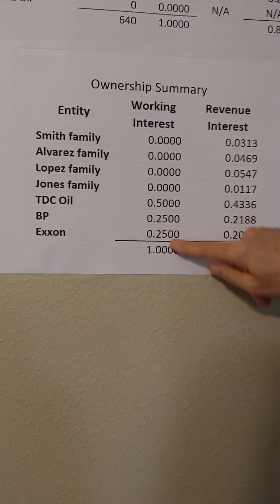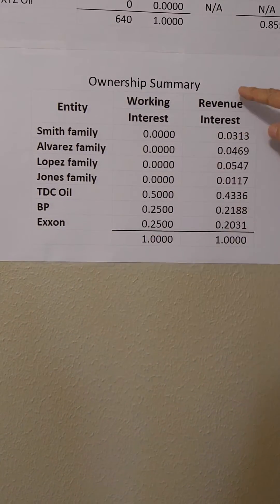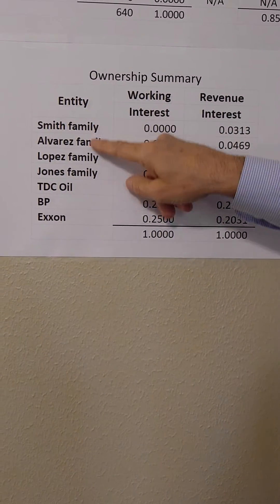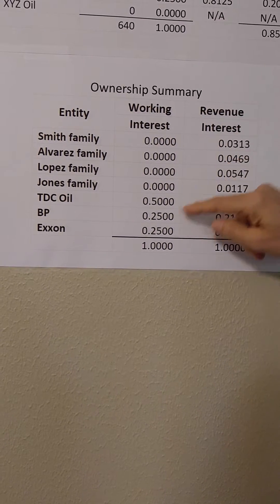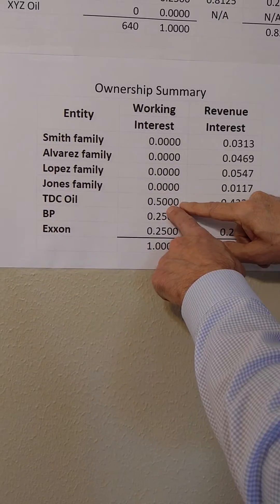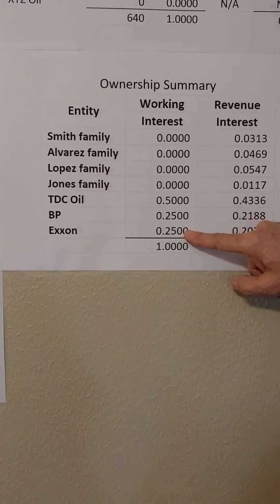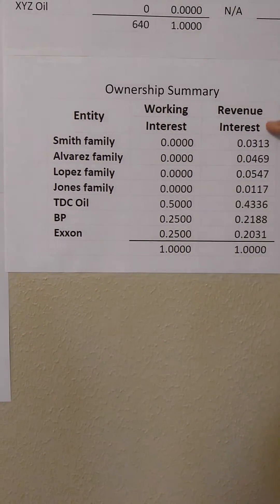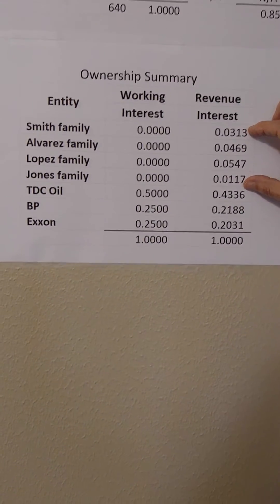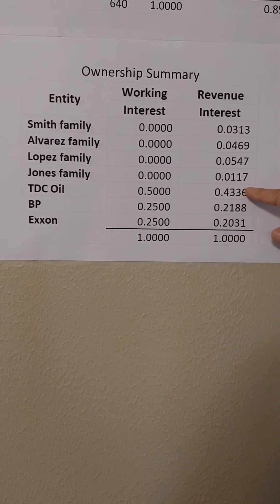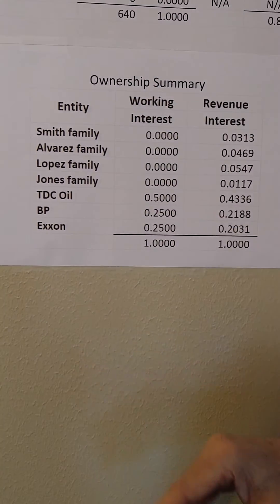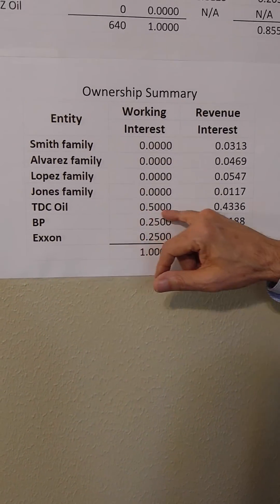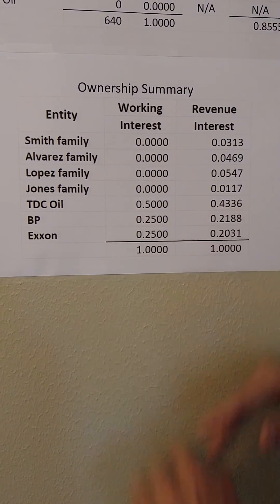To summarize: here are the working interest entities involved in the well and their revenue interests. The Smith family and all the mineral owner families have no working interest because they're not paying for the well. TDC will have a 50% working interest, BP 25%, and Exxon 25% — totaling 100%. On the revenue side, the landowners get their royalties in the form of a revenue interest, and the oil companies and working interest owners get their share, which also adds to 100%. When you run the economics in your software and your client is TDC Oil, you have to input these two ownership numbers. I hope that explains it and you found it helpful.